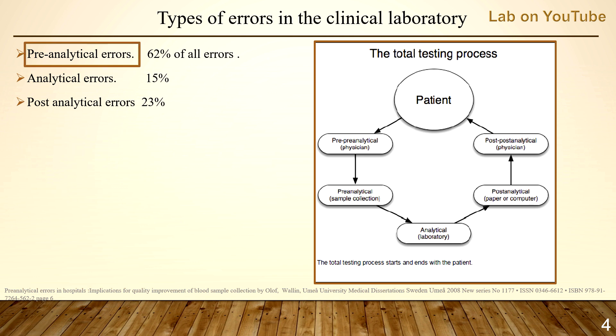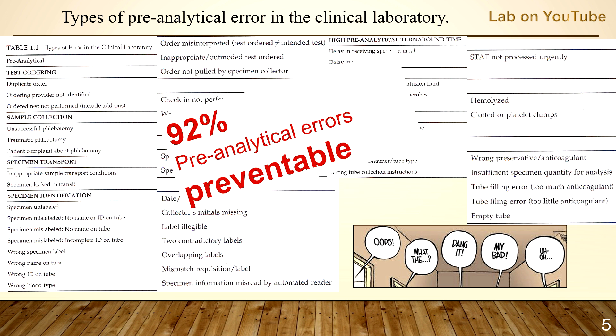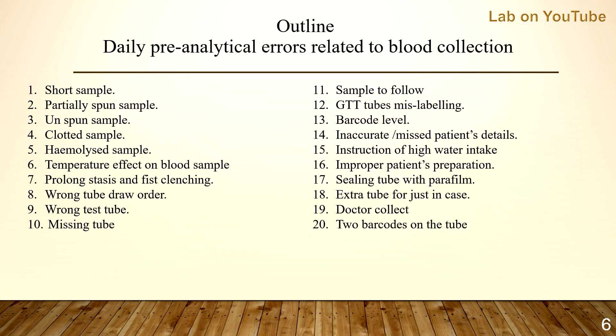This series focuses on pre-analytical errors. The list of pre-analytical errors is really long, but the good news is that about 92% of pre-analytical errors are preventable, as studies have shown. By completing this series of videos, there will be a transformation in terms of understanding these 20 types of errors or mistakes, why they happen, and how to prevent them.